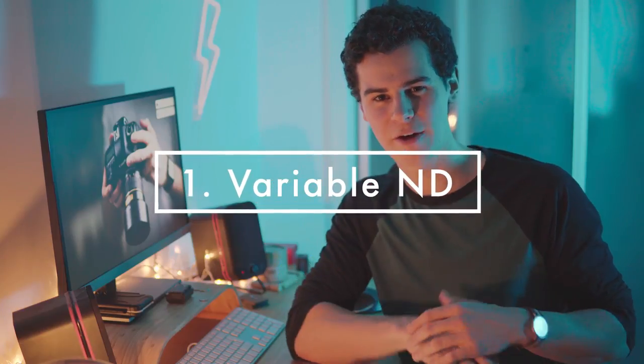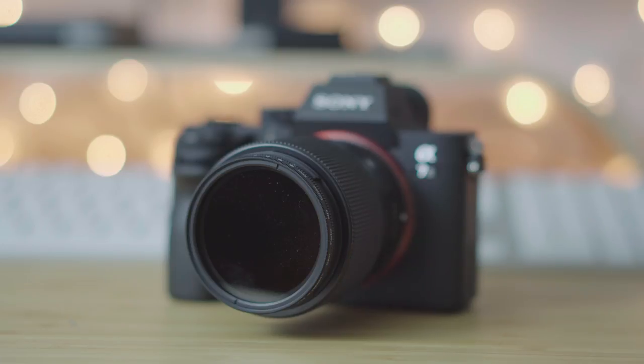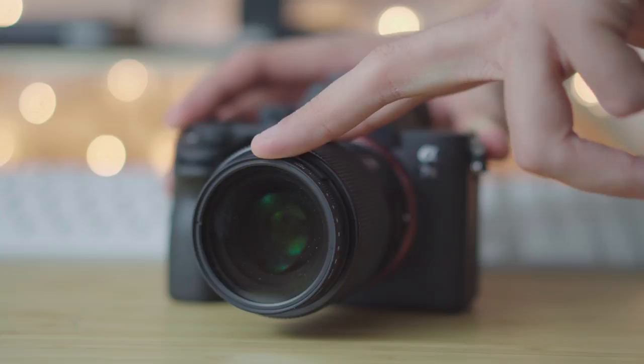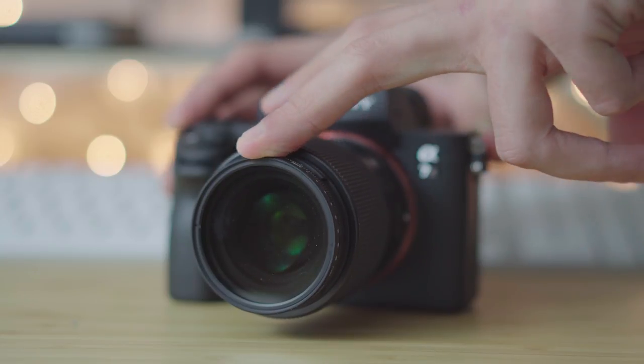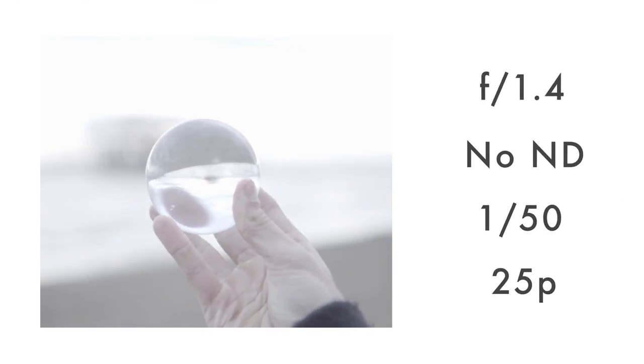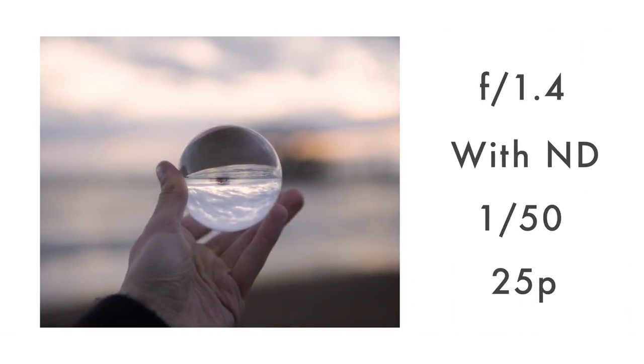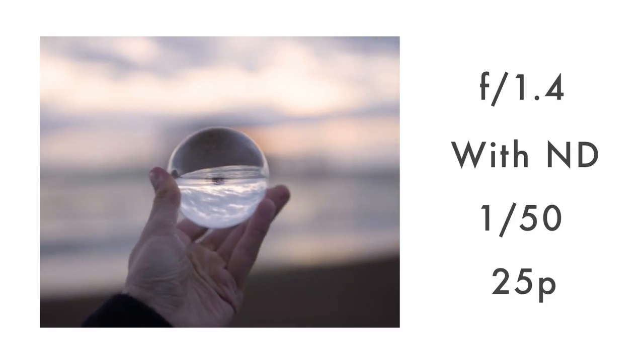At number one, which is pretty much one of the most useful things on this list, is this: a variable ND filter. What it's going to allow you to do is change the amount of light coming into your camera. That's super useful if you're shooting video particularly. You can restrict the light coming in, knock down the f-stop, and get that gorgeous shallow depth of field. They're generally super cheap on Amazon, and you'll never have to resort to bumping up your shutter speed and making your motion all weird.